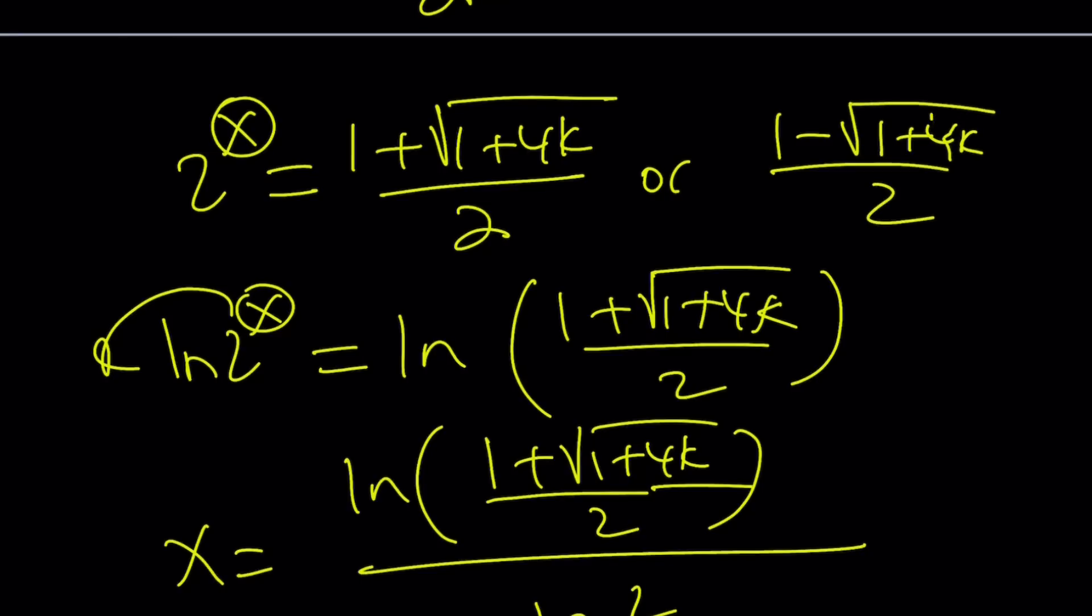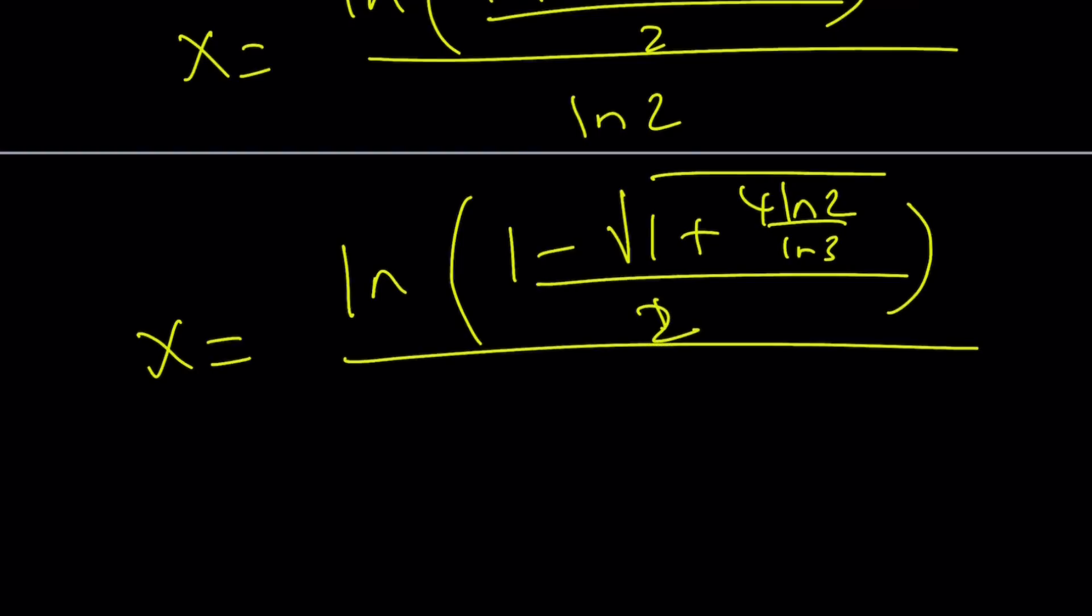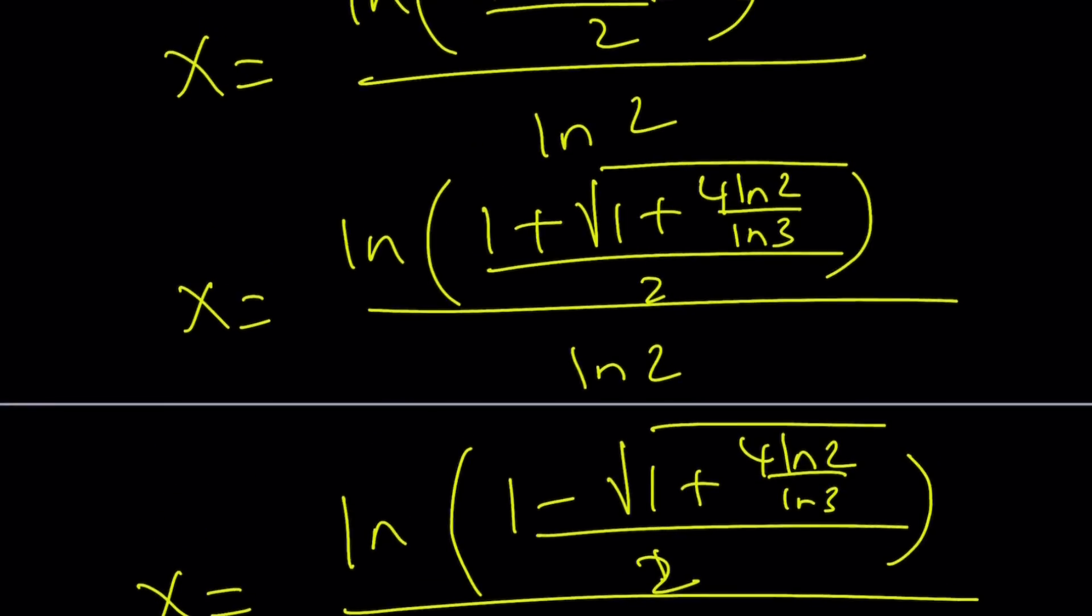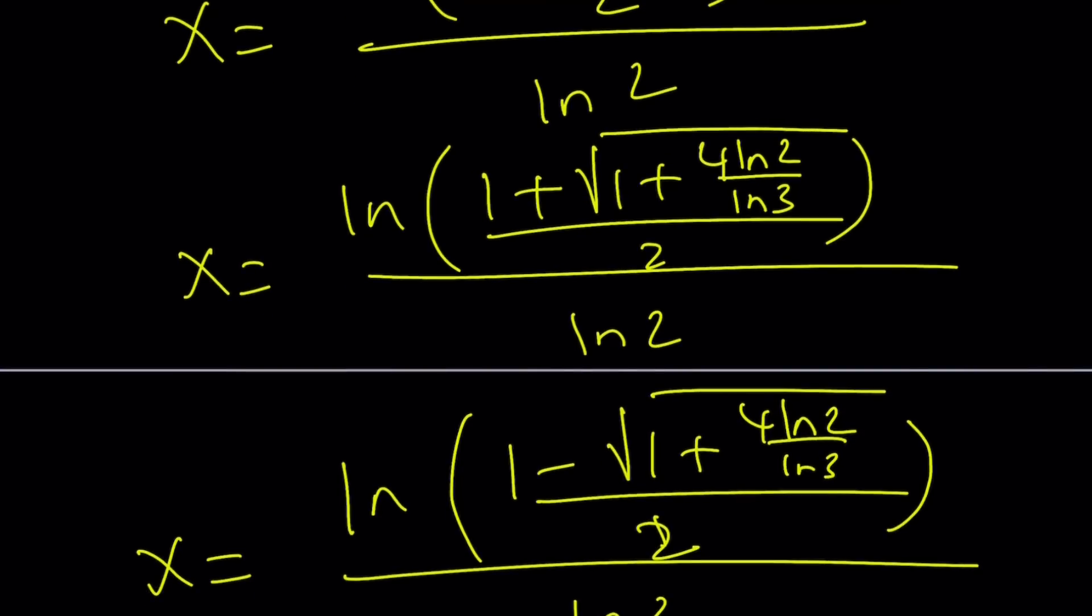So it's either this or 1 minus that. You just have to change the sign: x = ln((1 - √(1 + 4·ln 2 / ln 3)) / 2) / ln 2. And this basically gives us the solutions in numerical form. What are they? I don't know, they're just numbers and obviously negative numbers are allowed because this is an exponential equation.